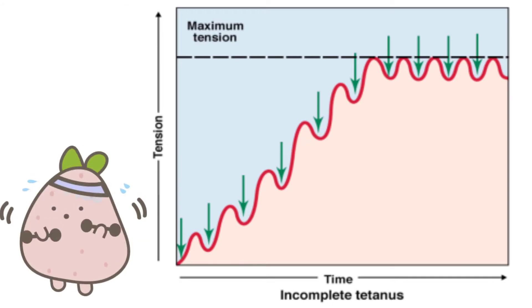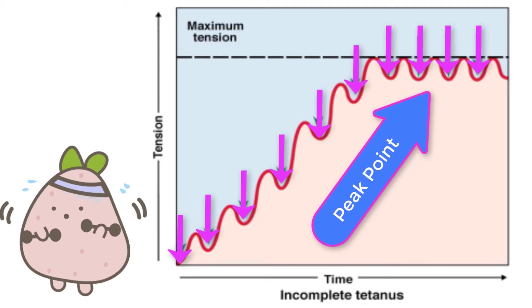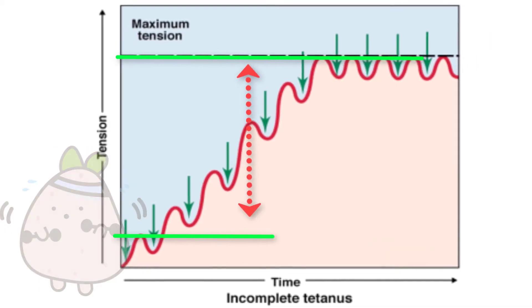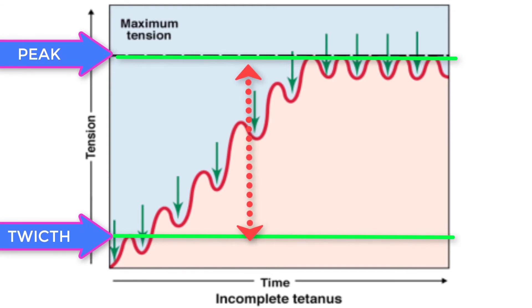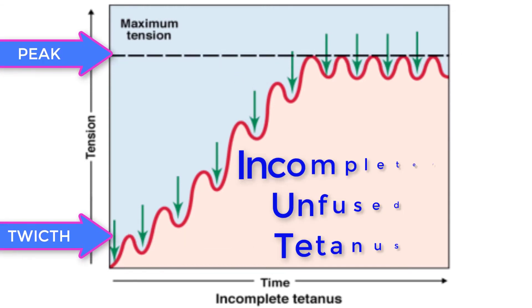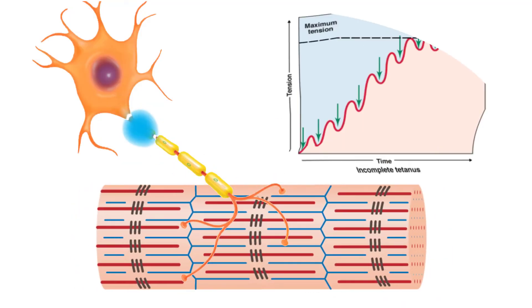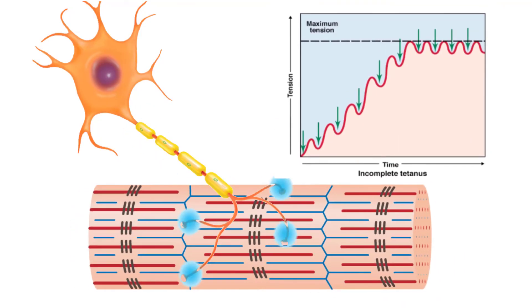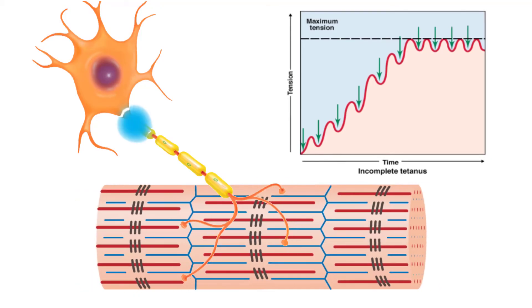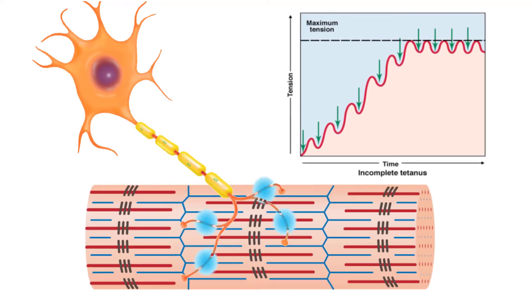If the frequency of motor neuron signaling increases, summation and subsequent muscle tension in the motor unit continues to rise until it reaches a peak point. The tension at this point is about three to four times greater than the tension of a single twitch. This state is referred to as incomplete tetanus. During incomplete tetanus, the muscle goes through quick cycles of contraction with a short relaxation phase for each.